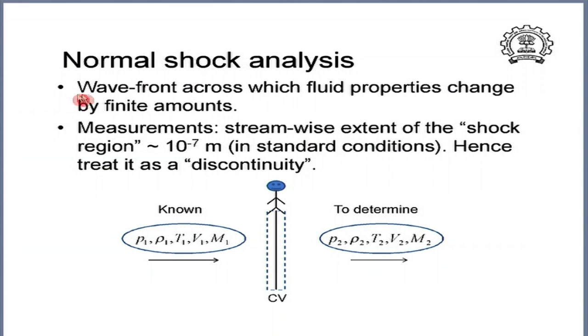In a thermodynamics course discussing compressible flow ideas, no more explanation than this is expected. A far more rigorous analysis can be performed in a compressible flow course, but based on a physical description, this is the mechanism to explain what causes shock formation. To summarize: a shock wave is a wave front across which fluid properties change by finite amounts. Physical and experimental measurements have shown that the streamwise extent of this shock wave region is very very small — typically of the order of 10 to the power minus 7 meters, which is a tenth of a micrometer under standard atmospheric conditions.